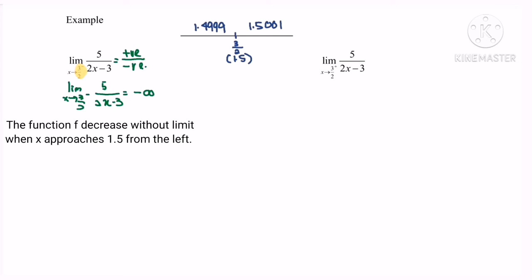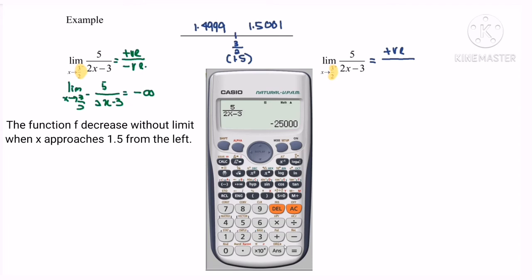Next, for the right-hand side: the limit when x approaches 3/2 from the right, meaning 1.5001. If we substitute the value, we will have a positive value for the numerator. Using the calculator with the function 2x minus 3 and calculating 1.5001, we will have a positive value.